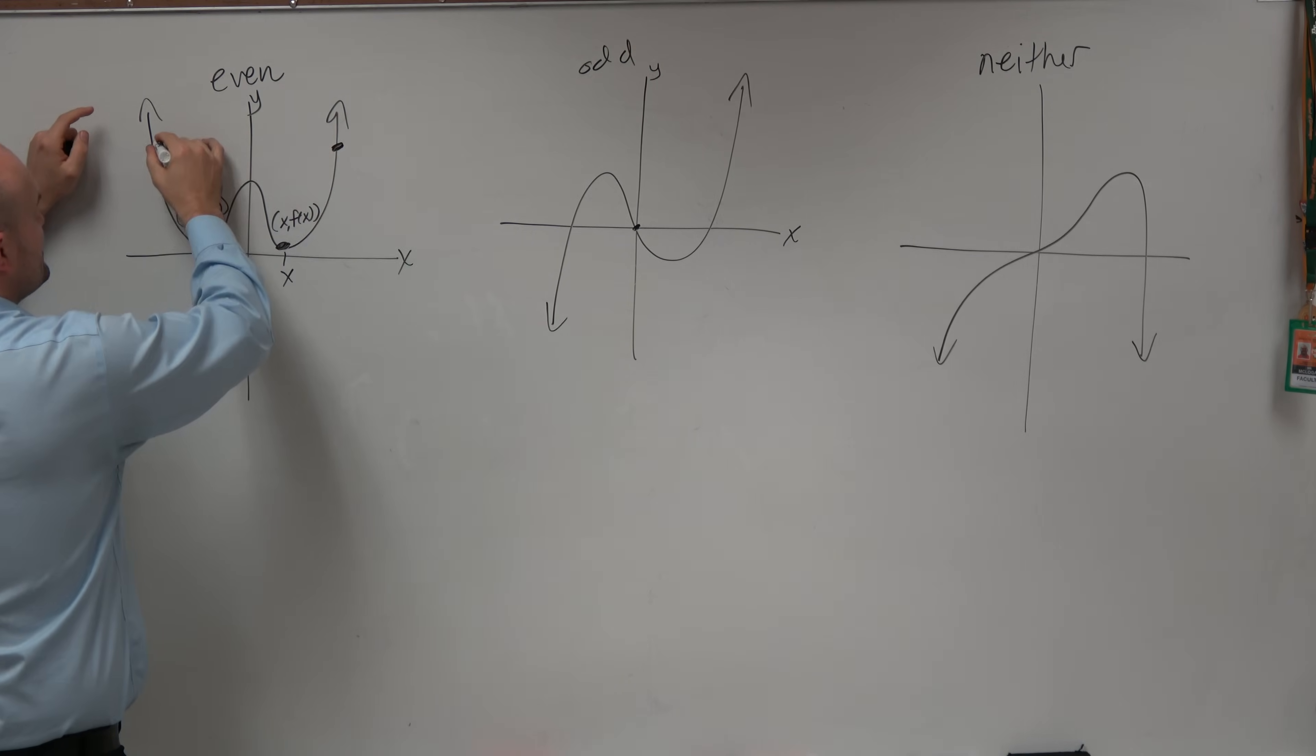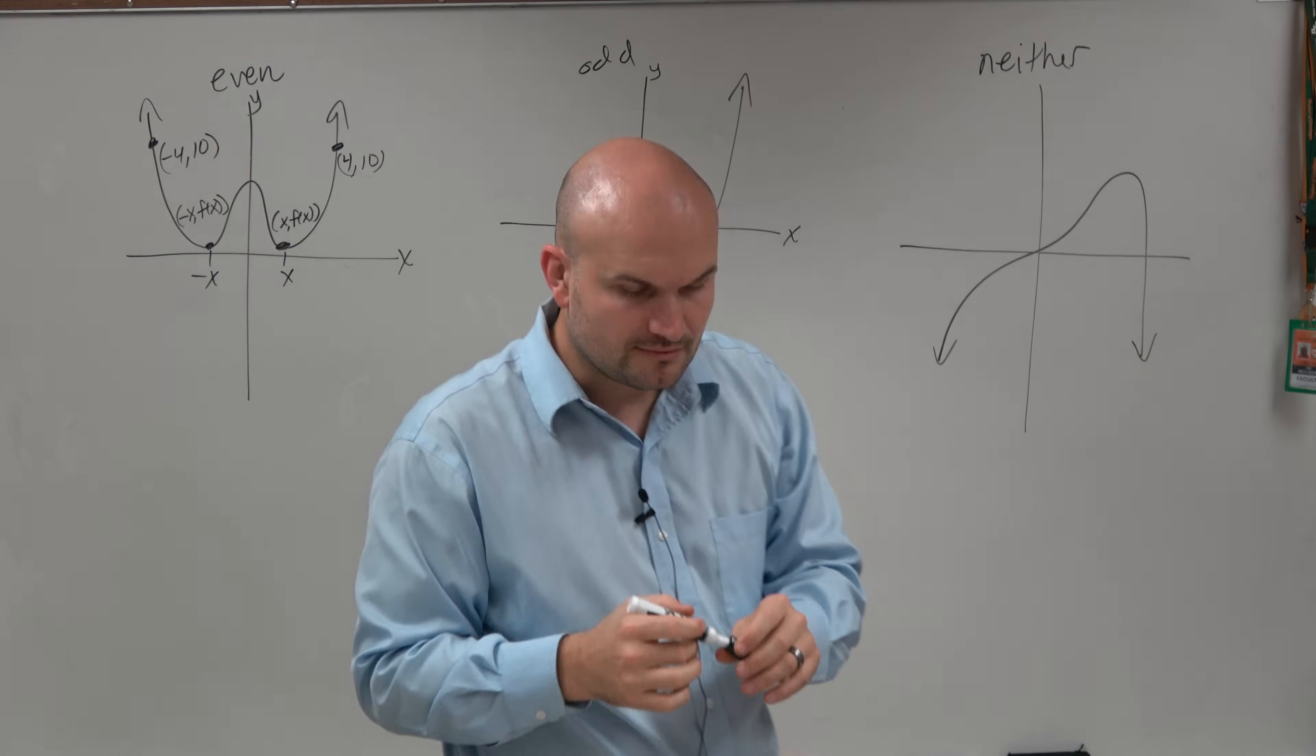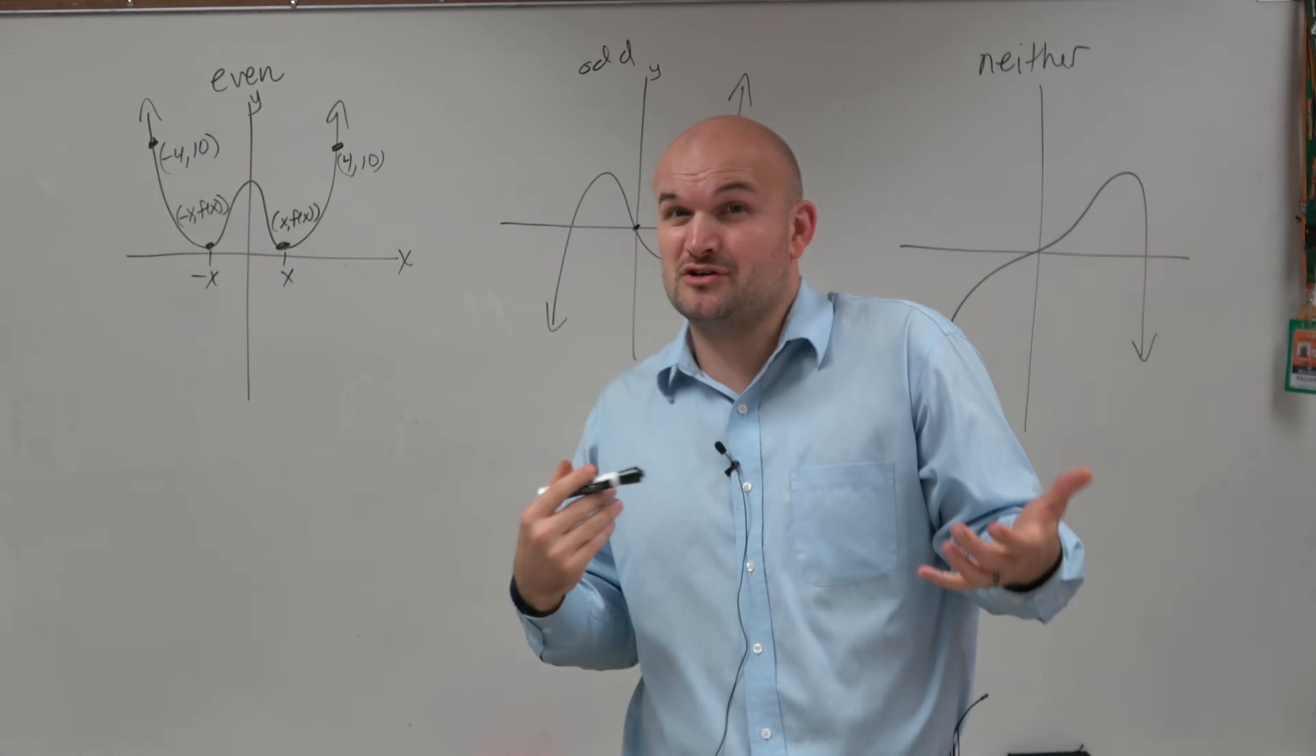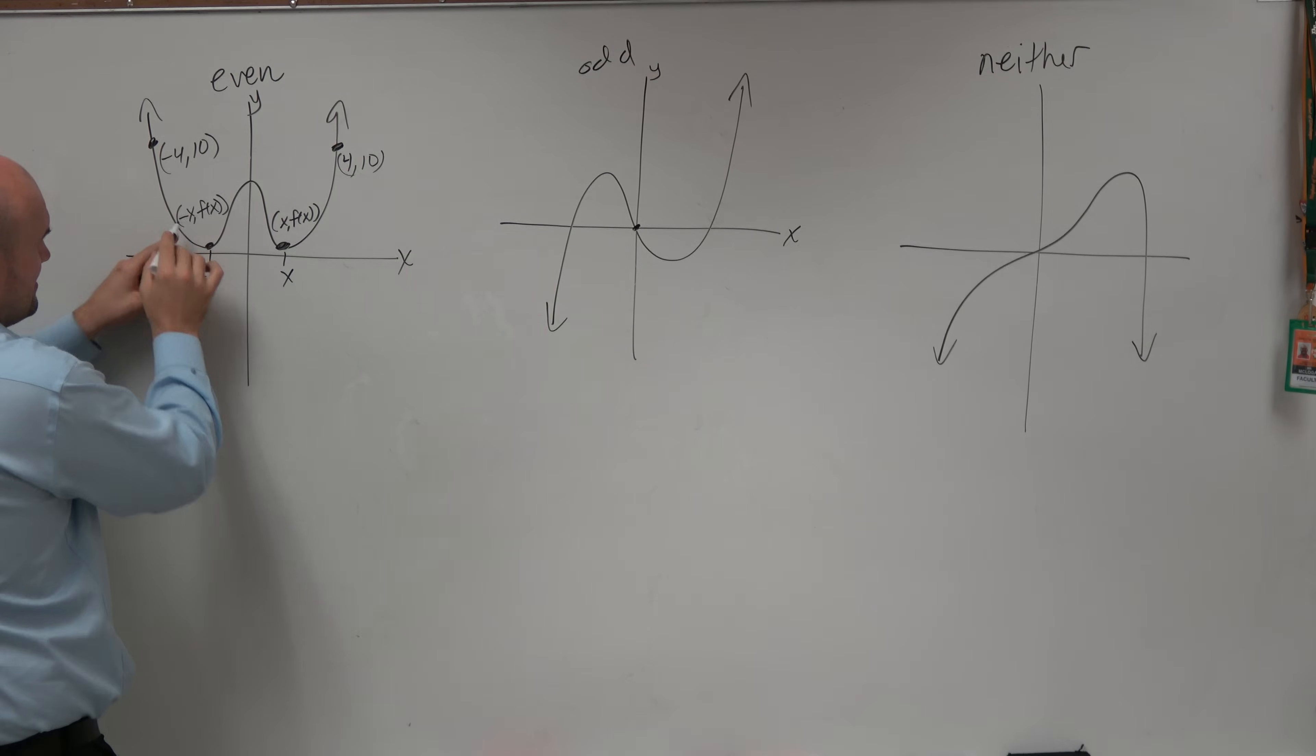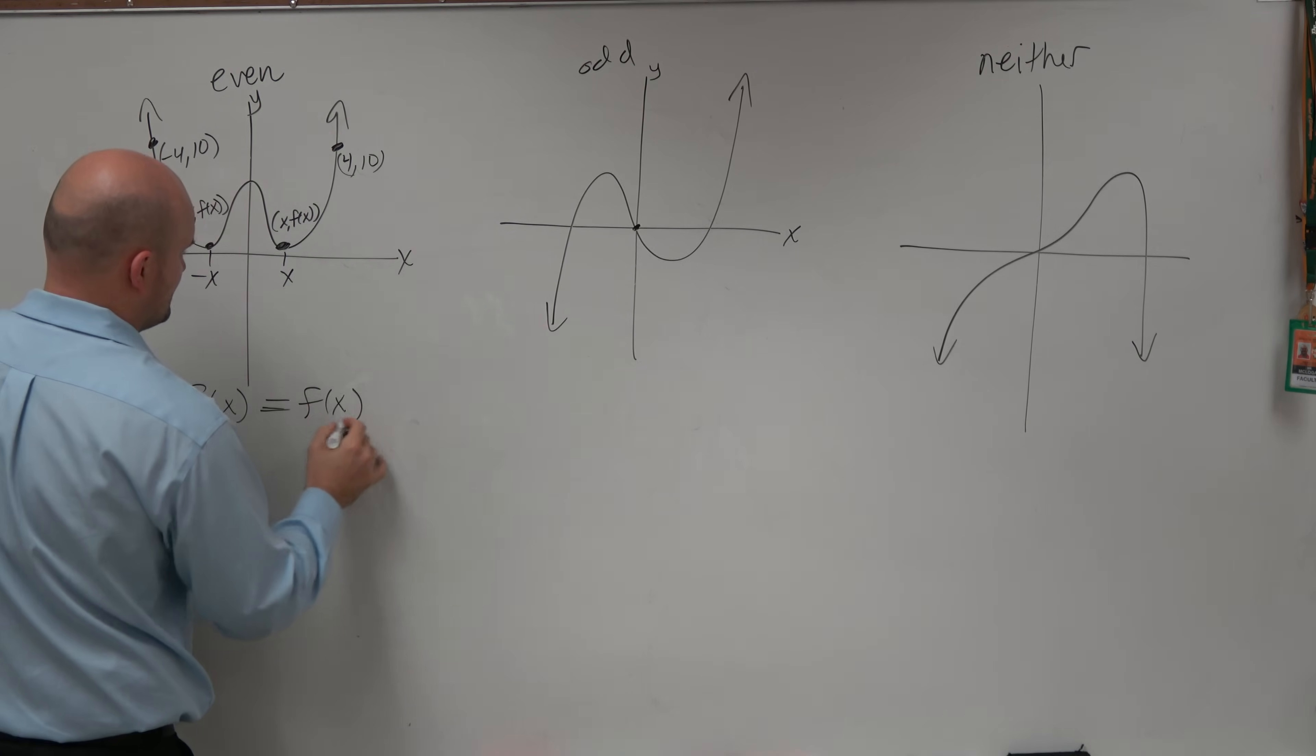And it doesn't matter what two points you pick. If this is like 4, 10, well then this point would be negative 4, 10 because of the symmetry. So the way to test that for any function, especially one that you have no idea what the function is, is basically to plug in f of negative x. So we know that if we plug in f of x, or if we plug in x, you know we're going to get our function f of x. I mean, f of x equals f of x. Whatever value plug in for x, you're going to get it.